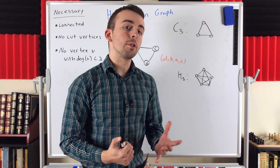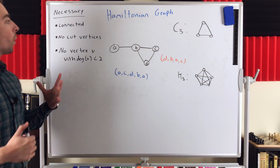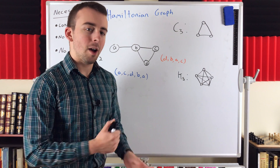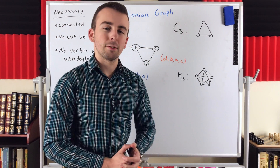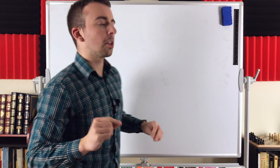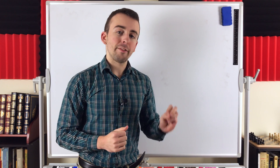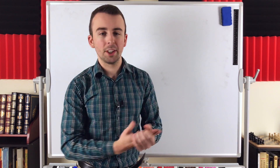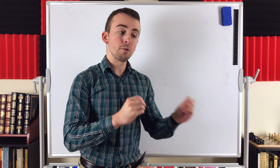Let me know in the comments if you can think of any other families of graphs that are always Hamiltonian, or any more necessary conditions. There are also sufficient conditions for a graph to be Hamiltonian — conditions where meeting them guarantees Hamiltonicity, but not meeting them doesn't rule it out. I'll go over those in another lesson. One of them is called Ore's theorem, and I'll hopefully have a proof out pretty soon, so subscribe so you don't miss it.